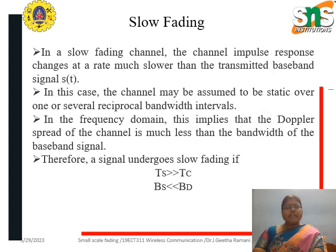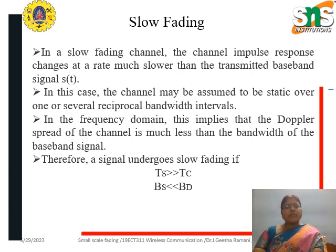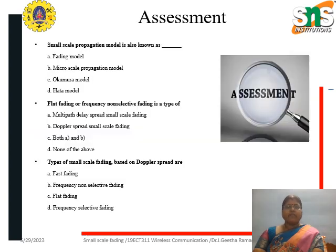For slow fading, the condition is just reversed: TS is much greater than TC and BS is much less than BD. In the case of a slow fading channel, the channel impulse response changes at a rate which is much slower than the transmitted baseband signal S(t).